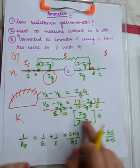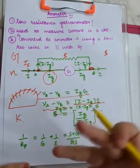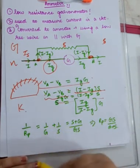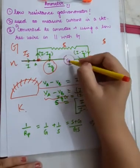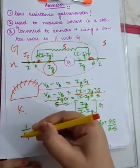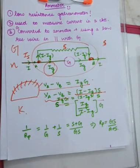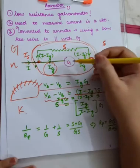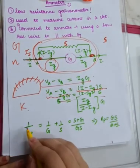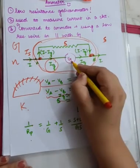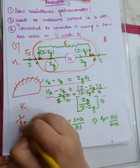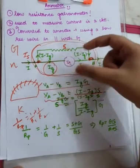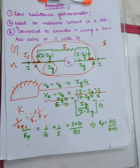Now, what is the effective resistance of the ammeter? Since this is a parallel combination — this whole device including galvanometer and shunt is the ammeter — the effective resistance is given by: 1 upon RP equals 1 upon G plus 1 upon S. Solve this to find the total equivalent resistance of the ammeter.